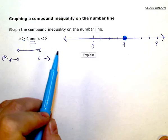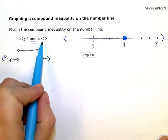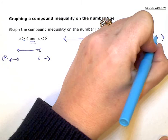Since the eight does not have an equal to, it's strictly less than, at the eight, I'm going to put an open circle.